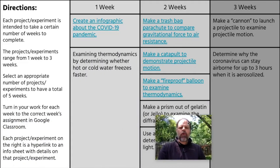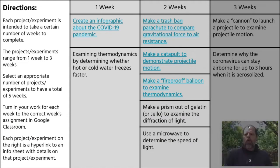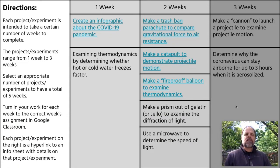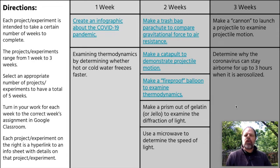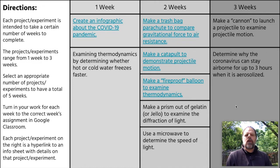The choice board has experiments and projects intended to take a certain number of weeks to complete. The choice board is broken up into four columns. The first column is the directions column, and then the three columns to the right are broken up by number of weeks: one week, two weeks, and three weeks. Under each of those columns are a certain number of projects or experiments intended to take that number of weeks.